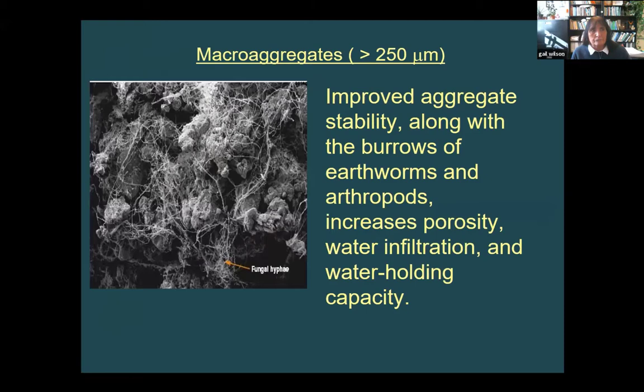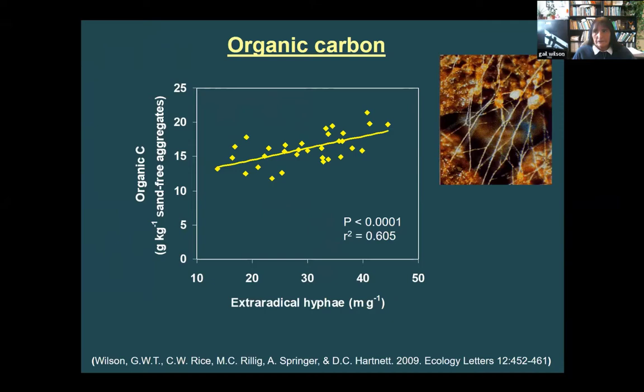Without the mycorrhizae, these aggregates just disintegrate — they're not water stable, they don't hold together. But with all this hyphae sticking particles together, you have macro aggregate stability. As Deanne said, macro aggregates are really important: they help keep other organisms in the soil, they increase porosity, and they increase water holding capacity. We found that increased hyphal abundance is related to increases in soil organic carbon, partly because of increased microbial biomass and partly because the plant is shuttling carbon down below ground to support these microbes.